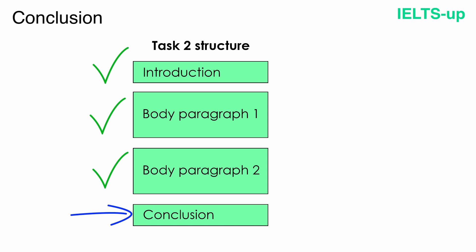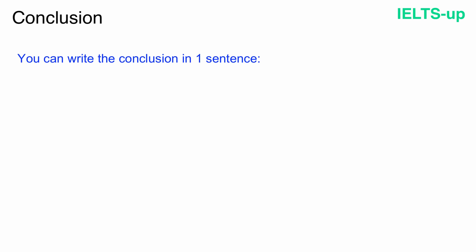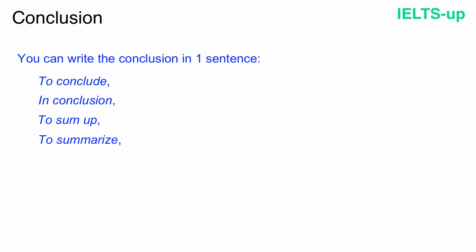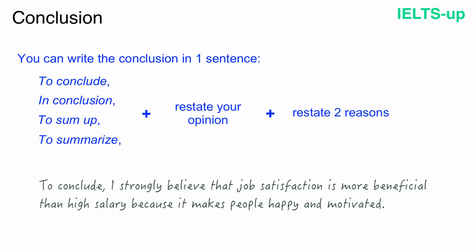Now it's time to write the last paragraph of our essay — a conclusion. You can write the conclusion in one sentence. To start your conclusion paragraph, use one of the following phrases: 'To conclude,' 'In conclusion,' 'To sum up,' or 'To summarize.' After that, restate your opinion and two reasons that support it. Here is how I wrote the conclusion: 'To conclude, I strongly believe that job satisfaction is more beneficial than high salary because it makes people happy and motivated.'